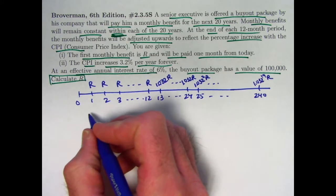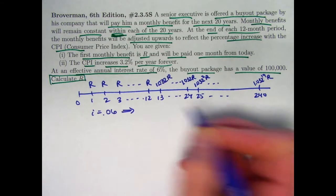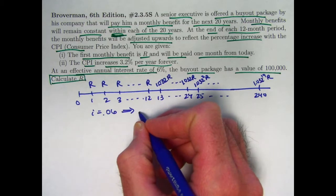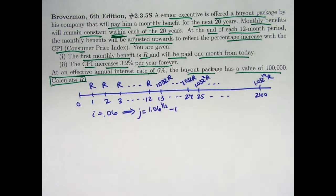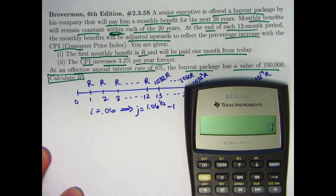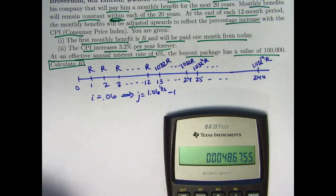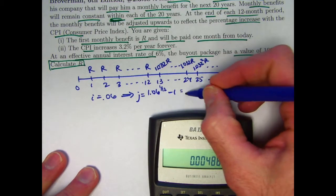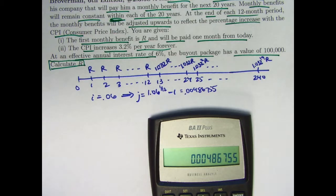We might want to write down some other information. I is the effective annual interest rate. That's 6% or 0.06. We might need the monthly, the equivalent monthly interest rate. Let's call that J. That would be 1.06 to the 1/12th minus 1. Hope that's something that you know pretty quickly without having to think about it too hard. 1.06 to the 1/12th power would be approximately... So it looks like J is this number here, about 0.00486755. That might be good to know.